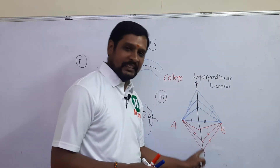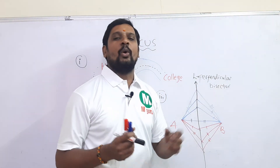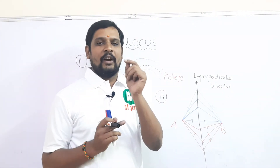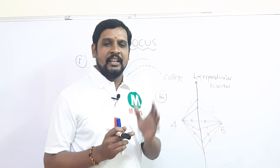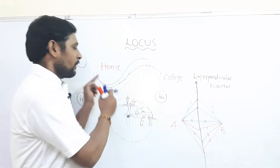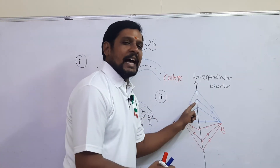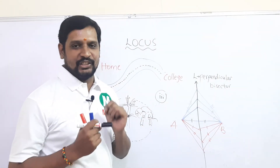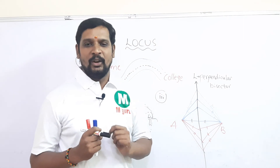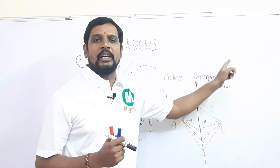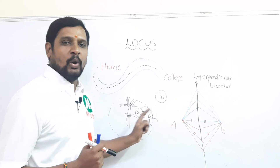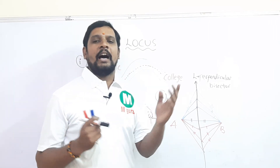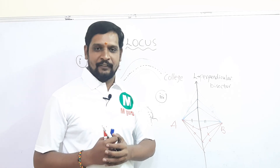The locus may be a curve, the locus may be a circle, the locus may be a straight line, or locus may be any geometrical figure. So to summarize: the set of points which satisfies the given geometrical condition is called locus. Locus might be a straight line, a circle, a curve, or any geometrical figure.